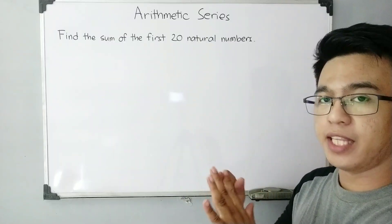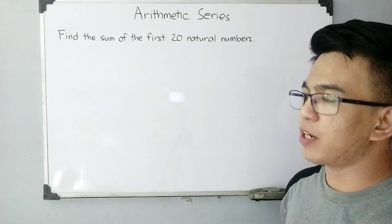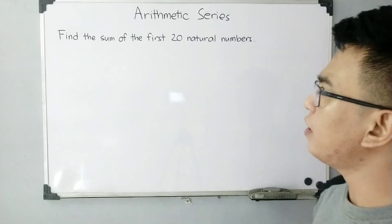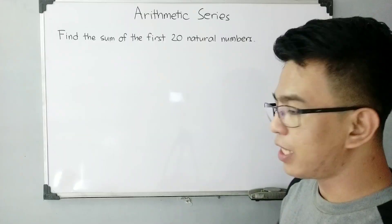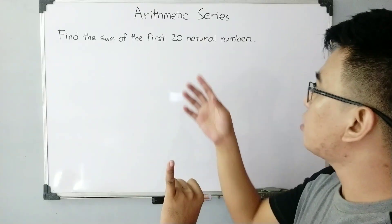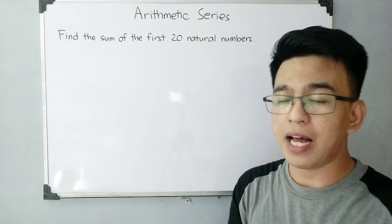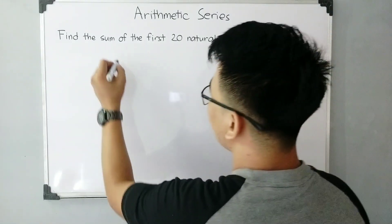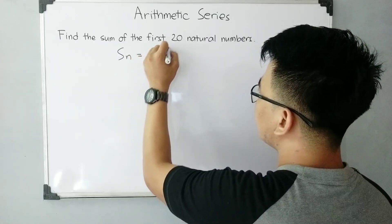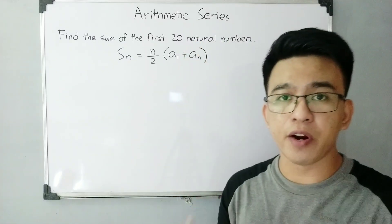What is being asked is the sum of the first 20 natural numbers — think of the first 20 natural numbers as the given sequence. We start with 1, and since there are 20 natural numbers, the last term is 20. Since the first and last term are given, we will use the formula S sub n = n/2 times (a sub 1 + a sub n).